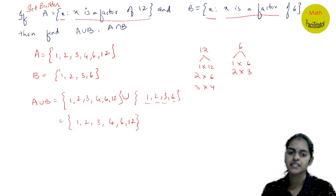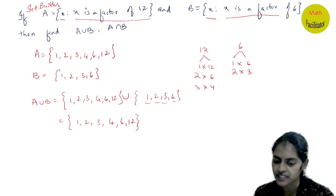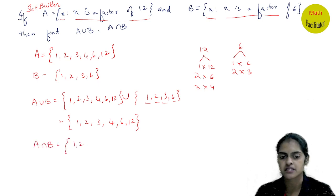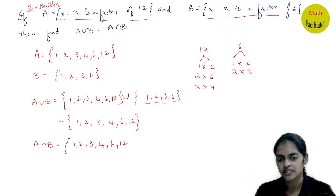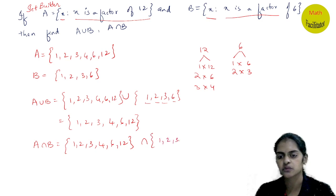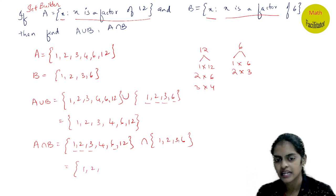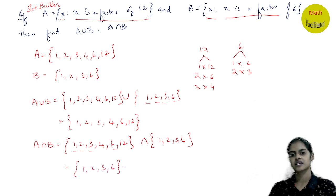Now let us write A intersection B. A intersection B contains only common elements. A = {1, 2, 3, 4, 6, 12} and B = {1, 2, 3, 6}. The common elements are 1, 2, 3, and 6. So A intersection B = {1, 2, 3, 6}.